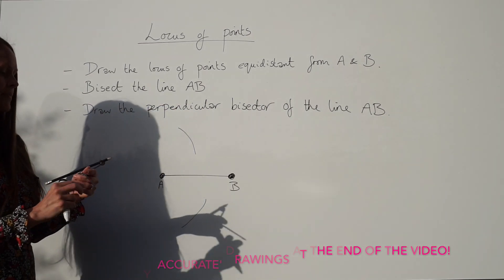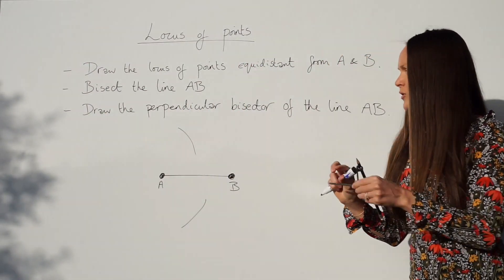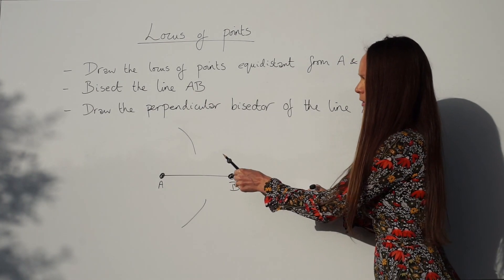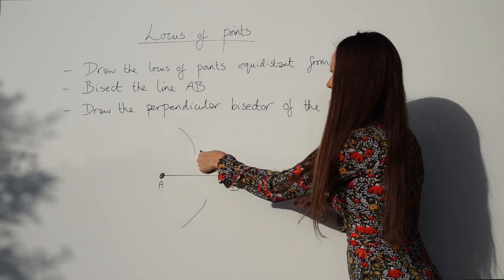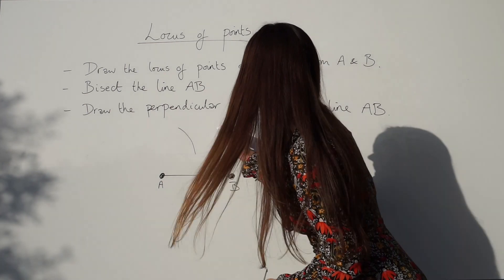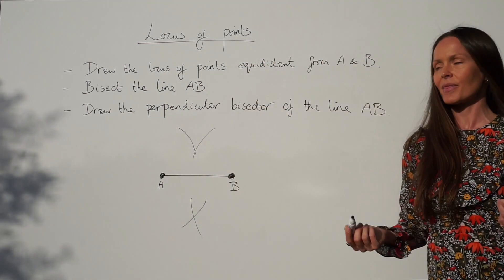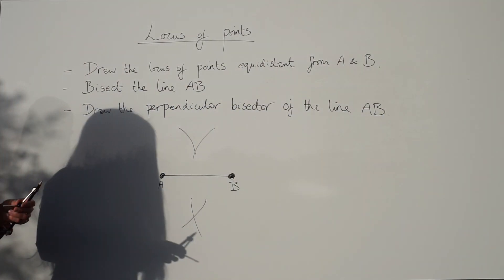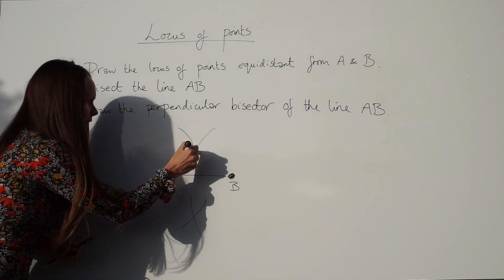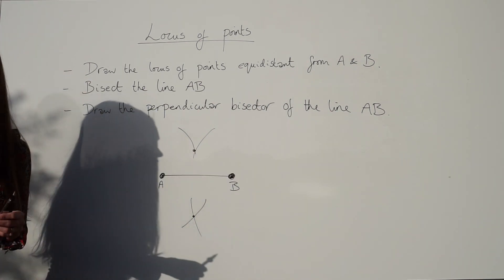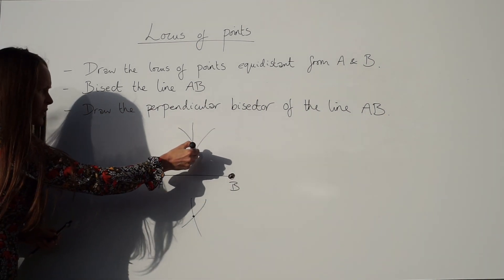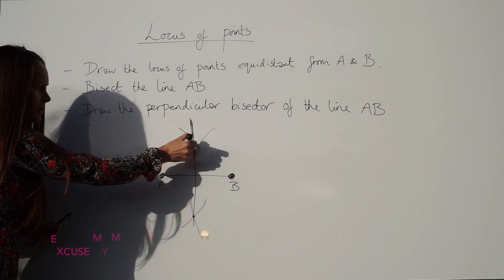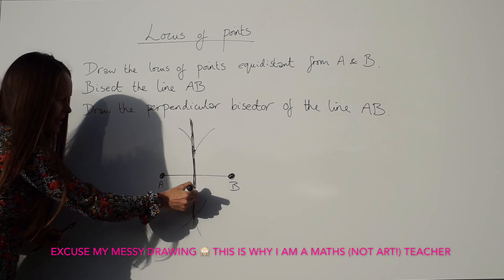Keeping the same distance, do the same thing on the opposite end of the line. Place your compass point on point B and draw an arc above the line and again below the line. When you have those arcs above and below, take a ruler and join up the points where your arcs cross each other, giving you a straight line down through the middle.